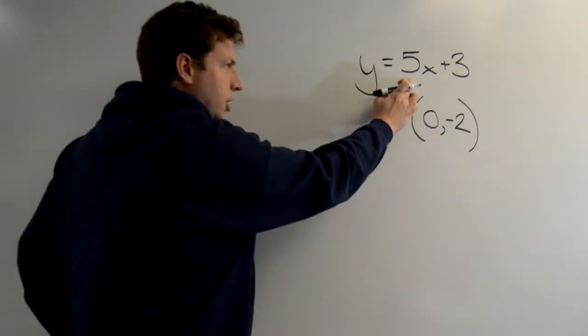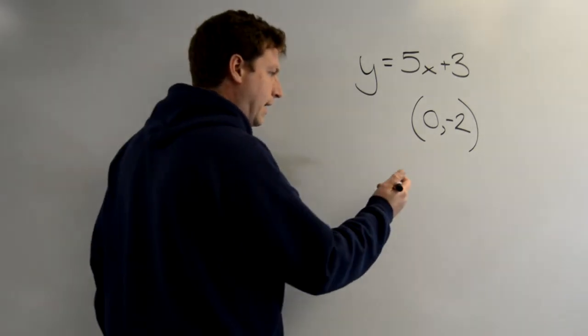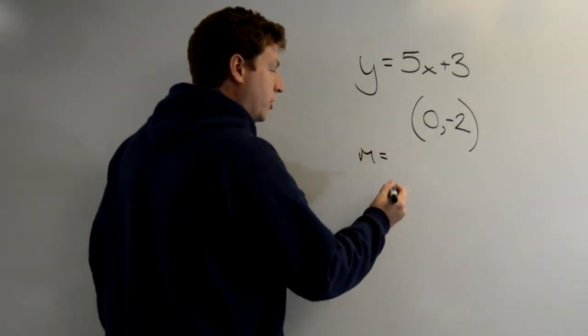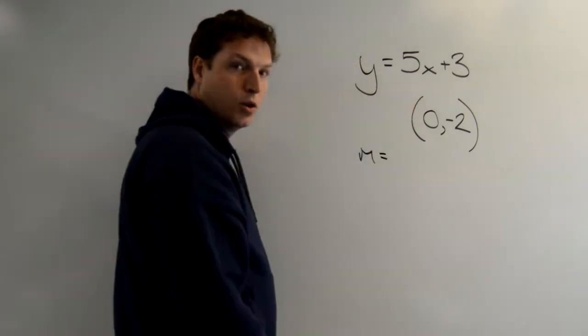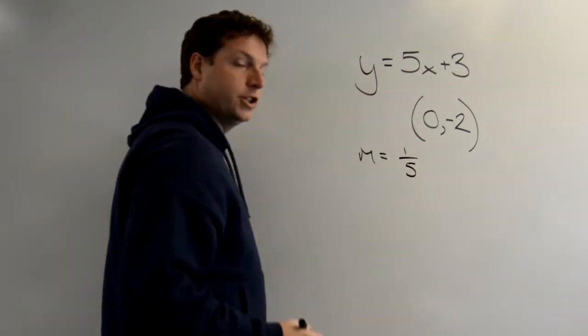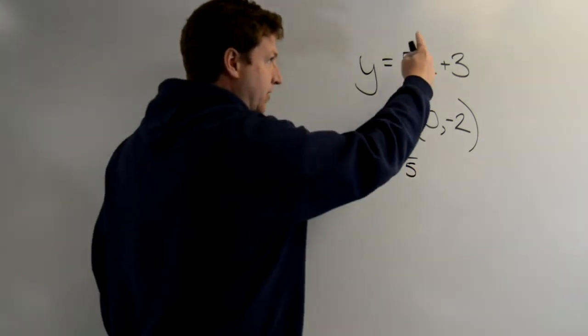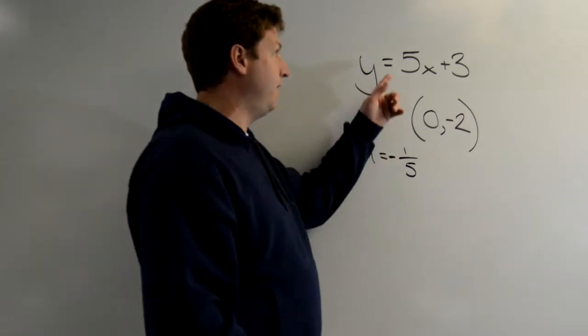The slope of our new line should be the reciprocal of 5, which is 1 over 5, but it should be negative, right? Two steps: we flip this one over and make it negative. If it was negative, we would have made it positive.